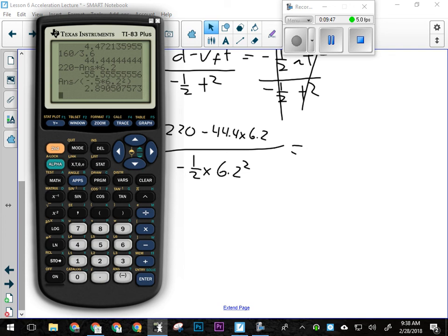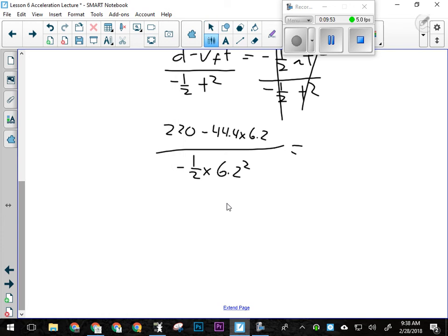So we're getting an acceleration there of 2.89 meters per second squared. Actually, we only have two significant figures, so 2.9 meters per second squared north, because they did tell us north in the question.